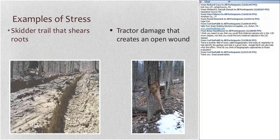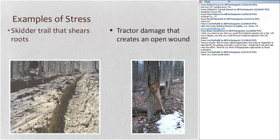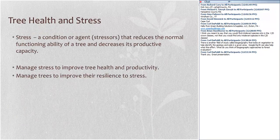Examples include ruts from skidders that sheared through roots, or a farm tractor that bumped up against a tree alongside a trail. We can define stress as a condition or agent — those are the stressors — that reduces the normal functioning ability of a tree and decreases its productive capacity. What we want to do is manage stress, reduce it, and by doing that minimize the reduction in tree health and productivity.